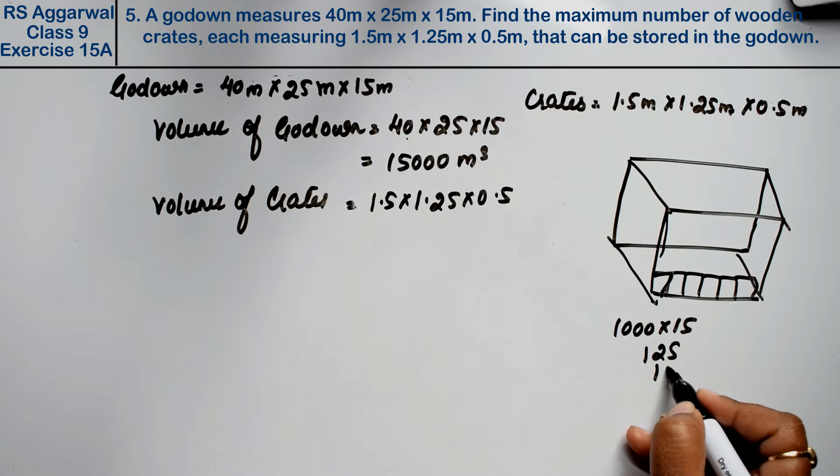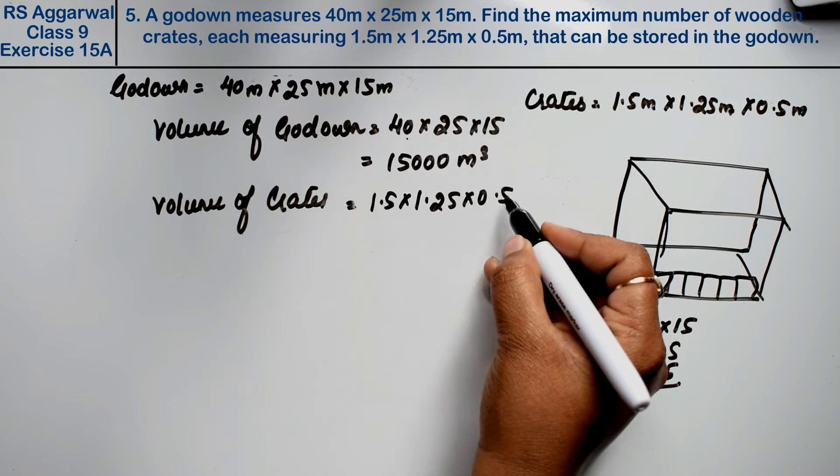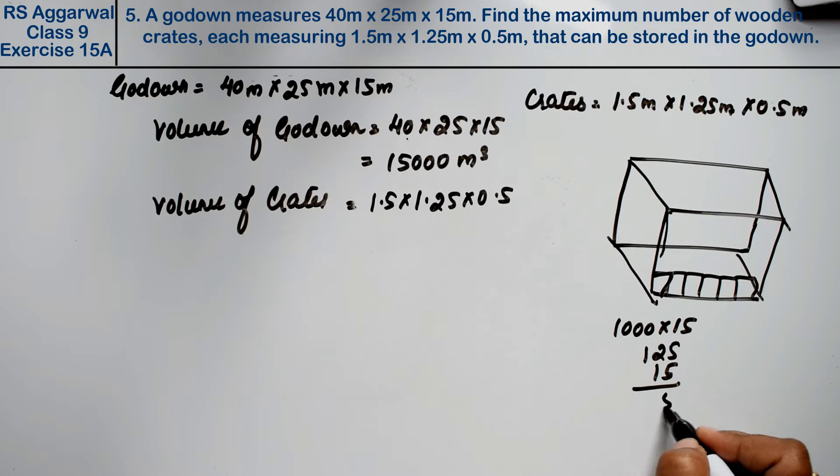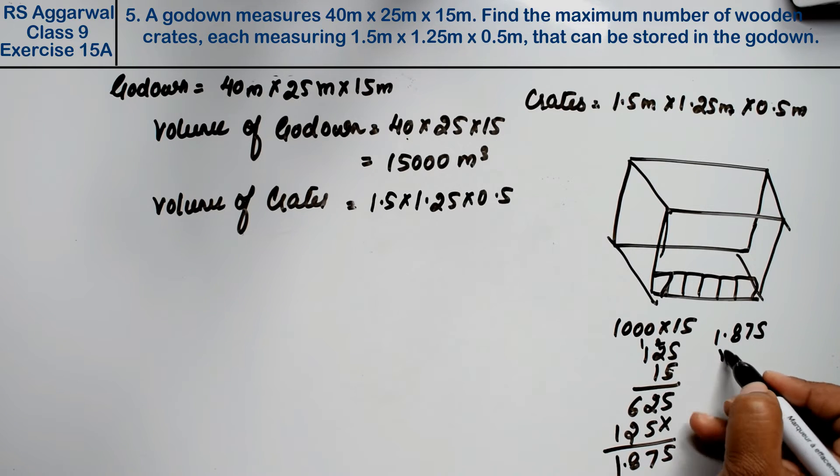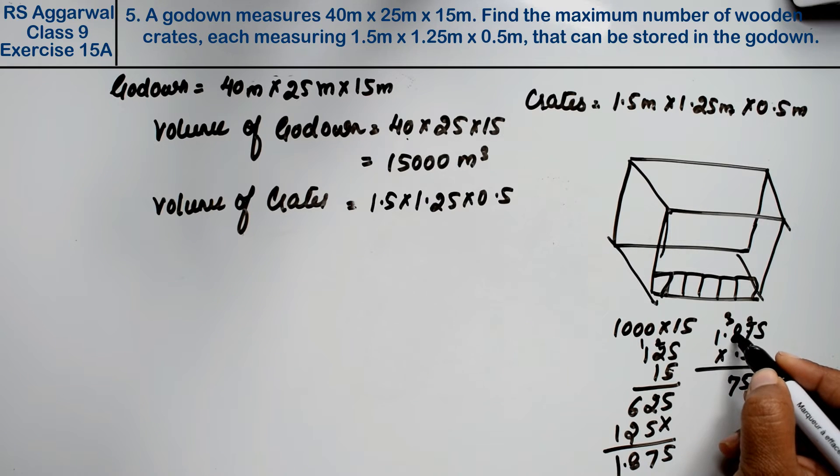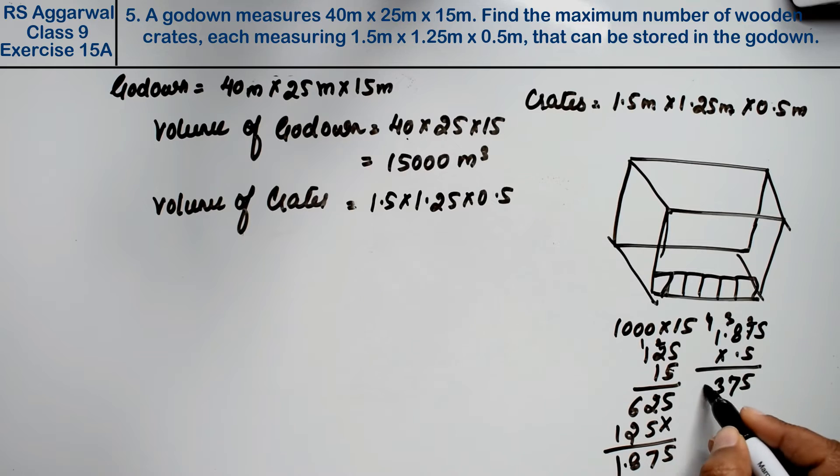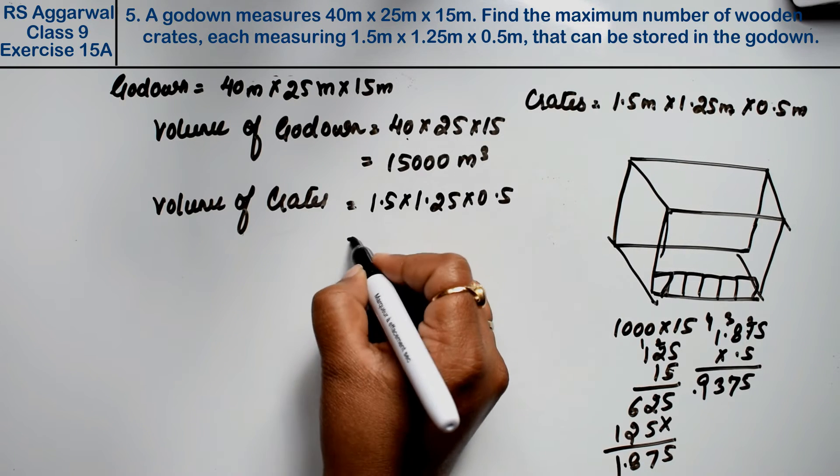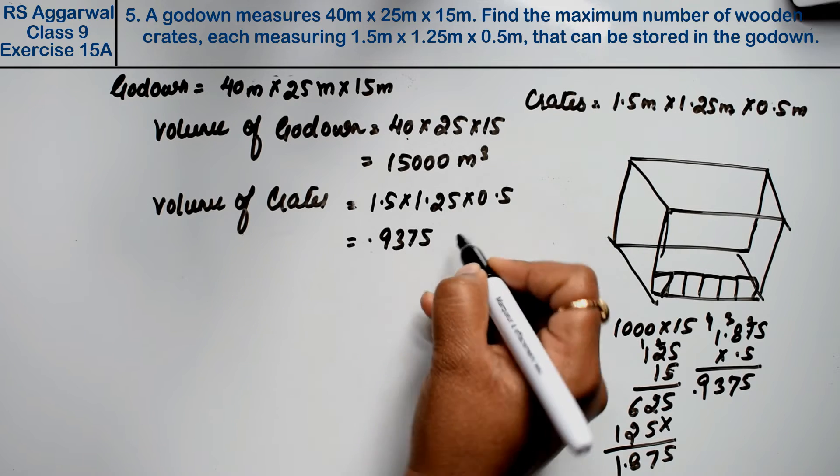First, 1.25 × 1.5: 5 × 5 is 25, carry 2; 5 × 2 is 10, plus carries gives 12; continuing through, we get 1.875. Then 1.875 × 0.5: 5 × 5 is 25, 5 × 7 is 35, continuing the multiplication. With 4 decimal places, we get 0.9375 cubic meters.